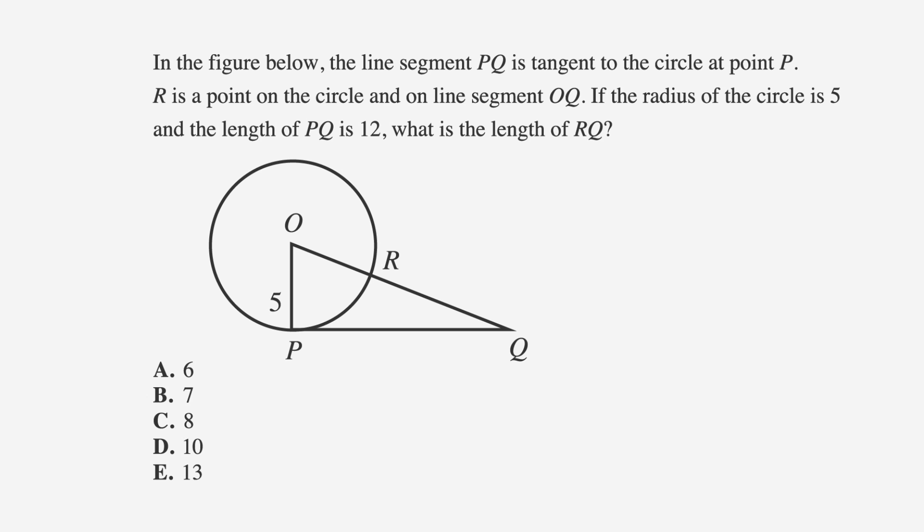Now that we're brushed up on our circle-specific vocab, let's look at a test question. In the figure below, the line segment PQ is tangent to the circle at point P. R is a point on the circle and on line segment OQ. If the radius of the circle is 5 and the length of PQ is 12, what is the length of RQ? A is 6, B is 7, C is 8, D is 10, and E is 13.